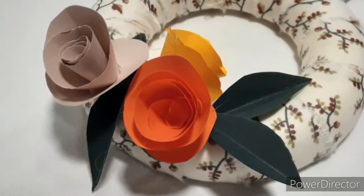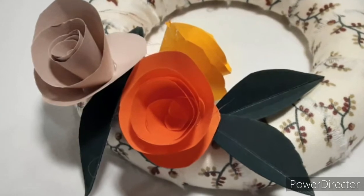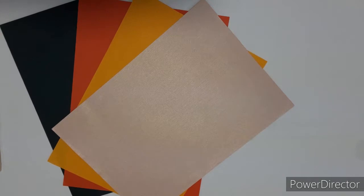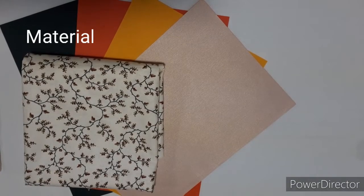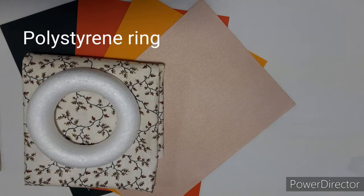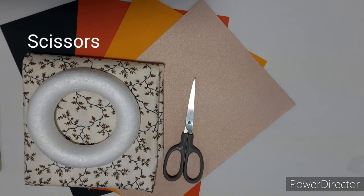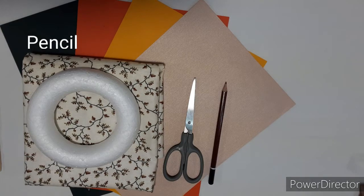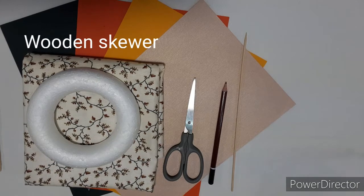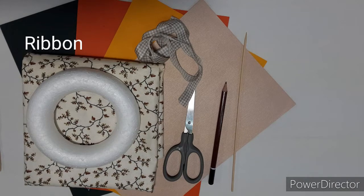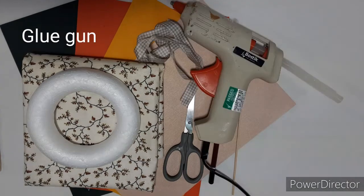The items that you're going to need are some colored papers, some material, a polystyrene ring, some scissors, a pencil, a wooden skewer, some ribbon, and a glue gun.